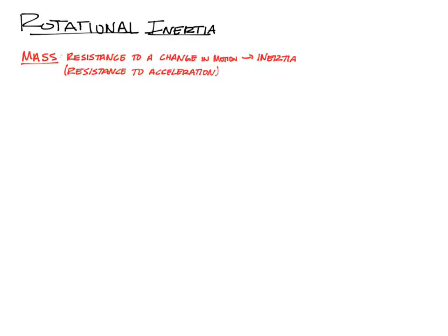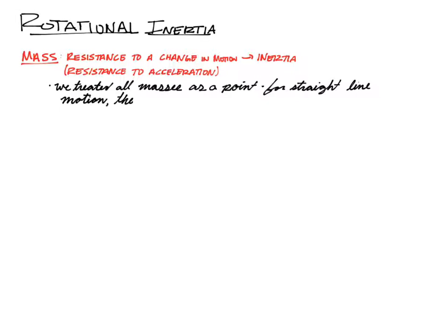Another way to talk about that is sluggishness — mass has this inherent sluggishness to it. The important thing we've been doing is treating all masses as a point mass. For straight line motion, any mass we talked about was always a point moving. We didn't care how big it was; we just reduced it down to a point. We're not going to be able to do that anymore because in rotational inertia things get a little bit different.